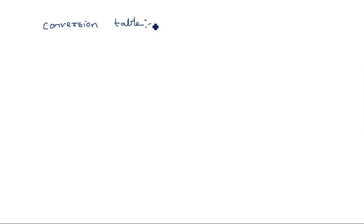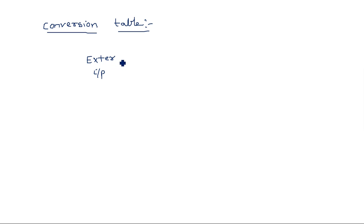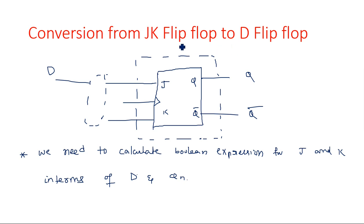The conversion table is very important and is derived from the excitation table. The elements of the conversion table are: the external input being given to the flip-flop to make it act as a different flip-flop. Every student may have a doubt about what type of table to use when converting one flip-flop into another.